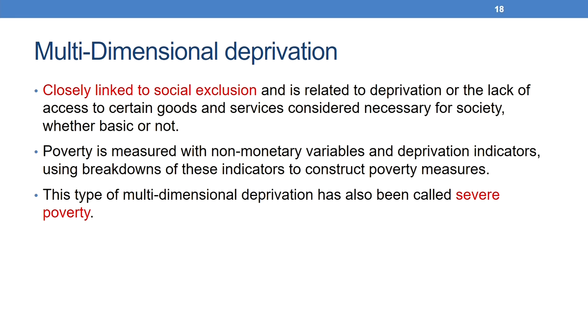It is in this context that multidimensional poverty assumes great importance. Poverty is measured with non-monetary variables and deprivation indicators, using breakdowns of these indicators to construct poverty measures. This type of multidimensional deprivation has also been called severe poverty. The human development reports — particularly the UN Human Development Reports — have been churning out a variety of measures over the past two decades that have greatly strengthened poverty analysis. Students are highly recommended to make use of the human development reports' analysis on poverty and various indices surrounding multidimensional poverty and deprivation.